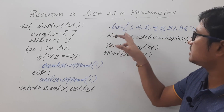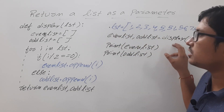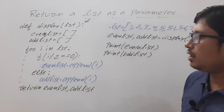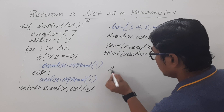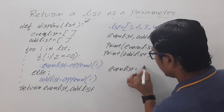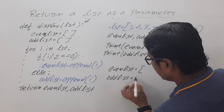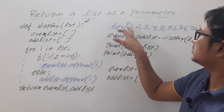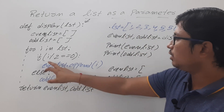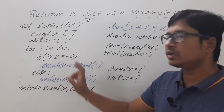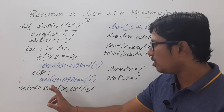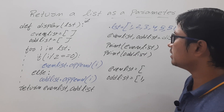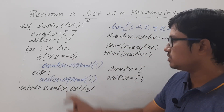So first you are defining a list called LST with elements. Then you are calling the display function by passing LST as a parameter. The control comes into the function, where you have created two empty lists called even list and odd list. Then for i in LST - i is a local variable. It will first access the first element, which is 1. One modulus 2 equals 1, which is not equal to zero, so the condition is false. It goes to the else block: odd list dot append i, so odd list now has the value 1.